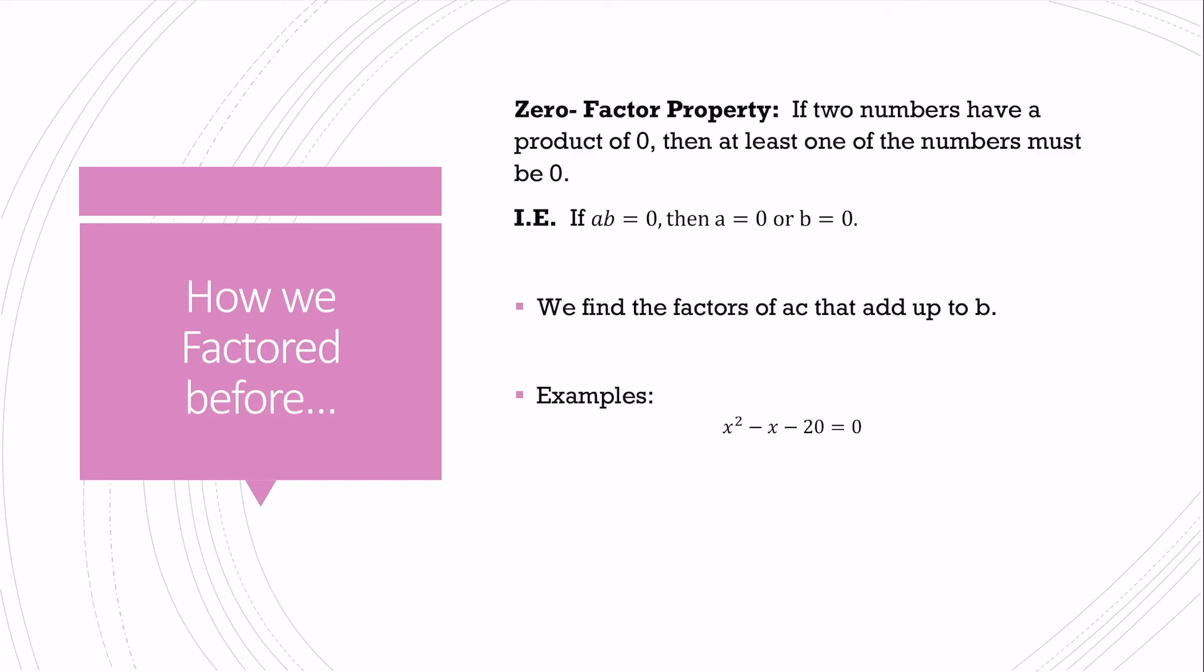So we start out with our abc's. What are some factors of ac that add up to b? So negative 20 is going to factor into 4 times negative 5, and 4 plus negative 5 is negative 1. So I know that this is going to factor to x squared plus 4x minus 5x minus 20 equals zero. And now I can factor by grouping.